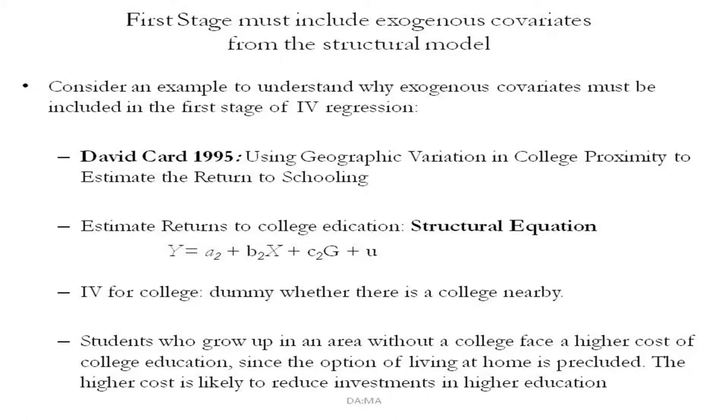What we are going to do today is carry the discussion forward with a very important specification issue of the instrumental variable strategy, namely the inclusion of exogenous covariates from the structural model. The structural model is basically the regression equation of interest or the relationship of interest. For example, we were discussing the experiment where we are trying to understand the effect of financial literacy training on insurance take-up.